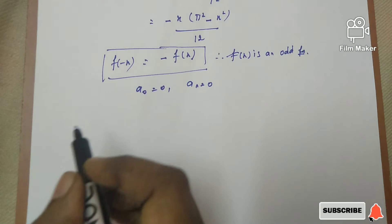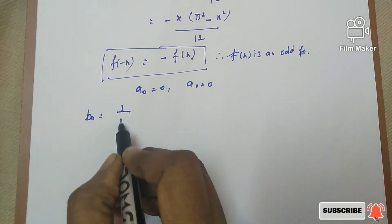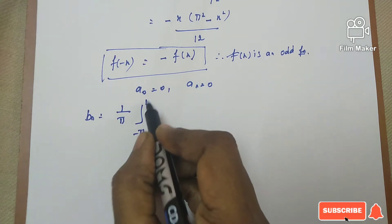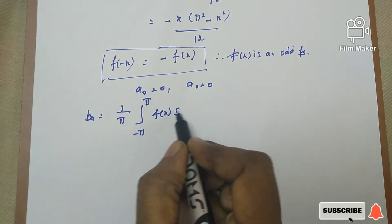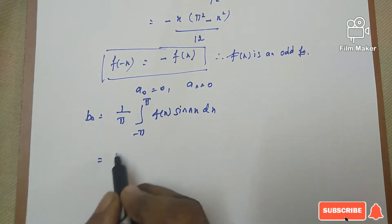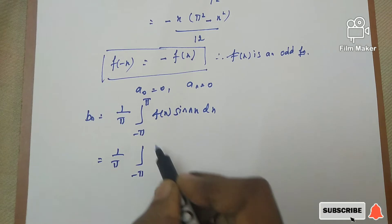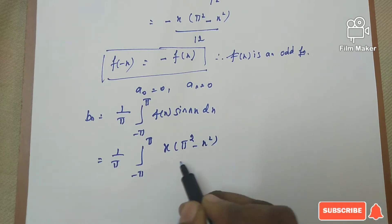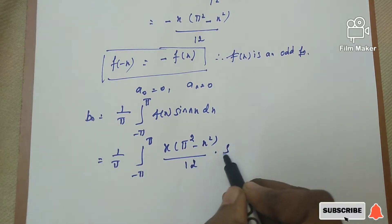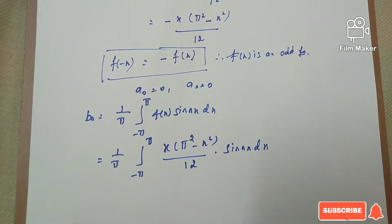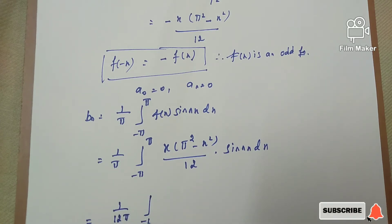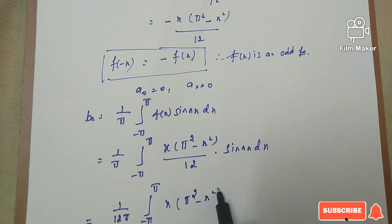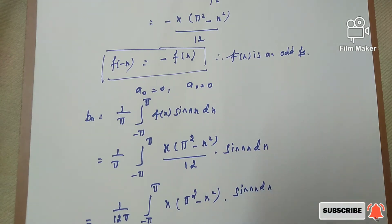So bₙ equals (1/π) integral from -π to π of f(x) sin(nx) dx. Substituting our f(x): bₙ = (1/π) integral from -π to π of x(π² - x²)/12 times sin(nx) dx. Now we are going to integrate that. Before integrating, we take the 12 outside.